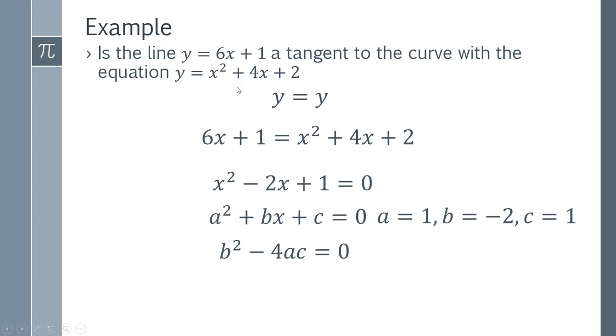So we substitute our values of a, b, and c in, like so. And you can see that minus 2 squared is 4, minus, and that's all going to multiply to 4, and so you get that 0 equals 0, and therefore that has proved that this must be a tangent.